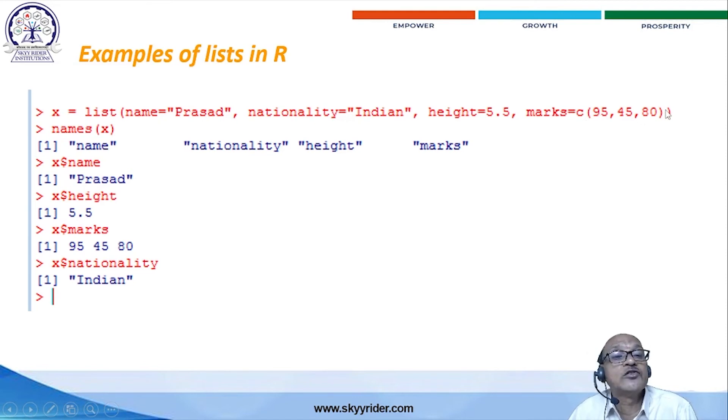And the double brackets is closed. How many names of a variable you have to test? Like names of X. Automatically the system responds like this: name and nationality and height and marks. These are the names in the sequence.